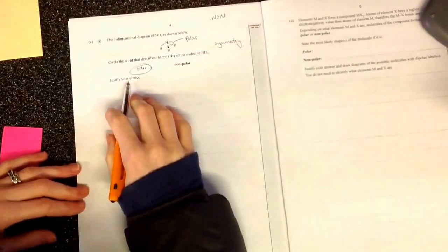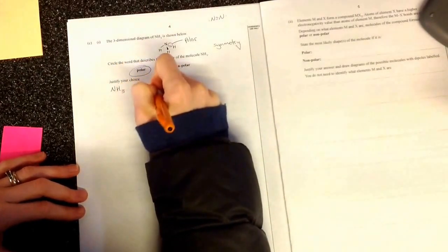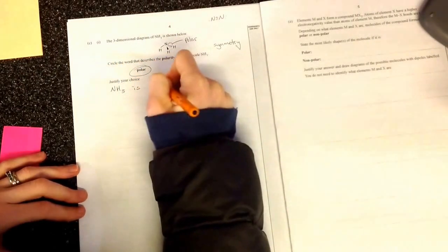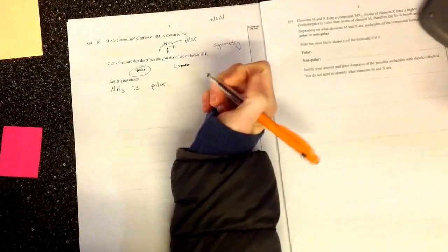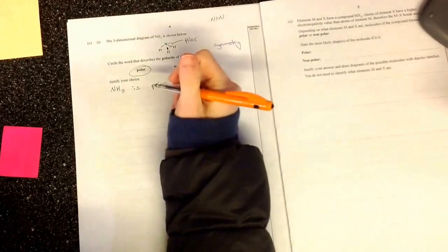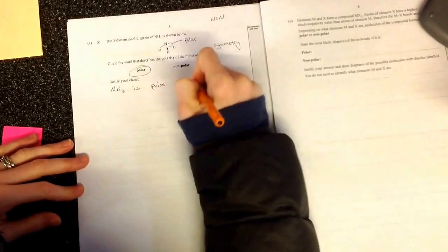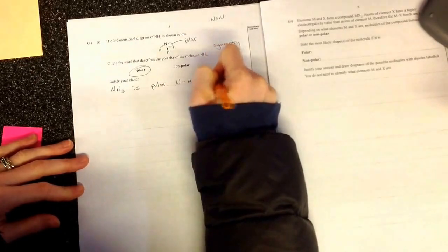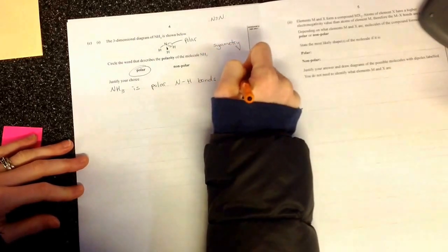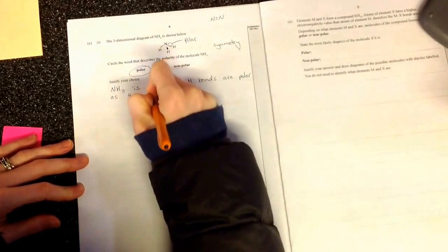Justify your choice. NH3 is polar. Now you need to talk about the shape of the molecule and that sort of thing. I'll mention first bond polarity. NH bonds are polar as they have different electronegativities.